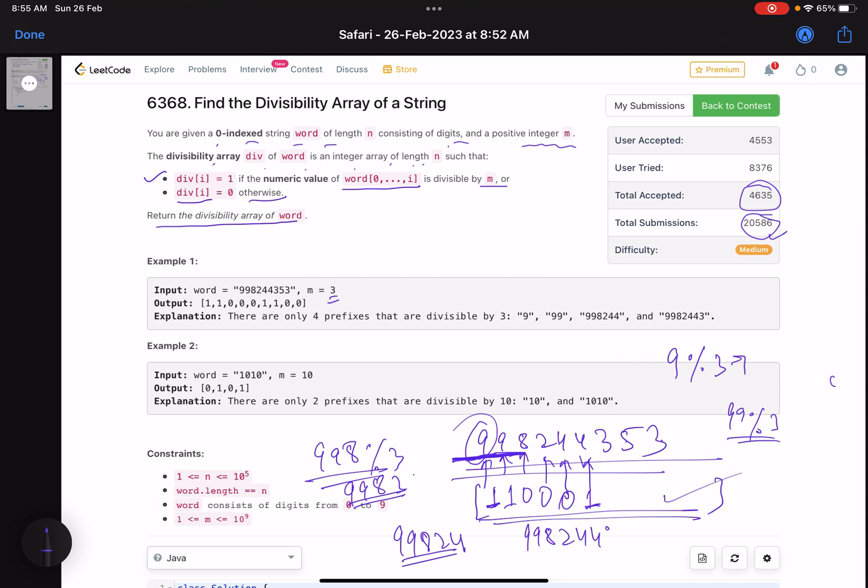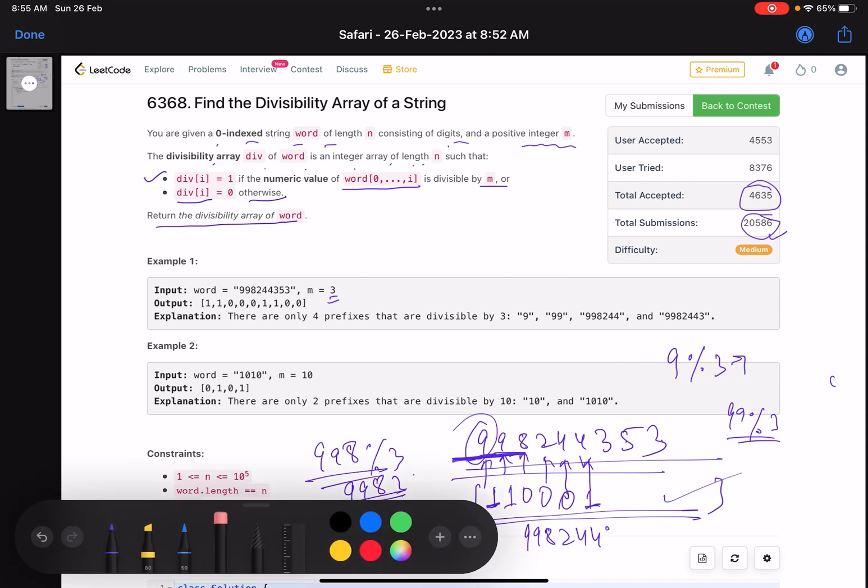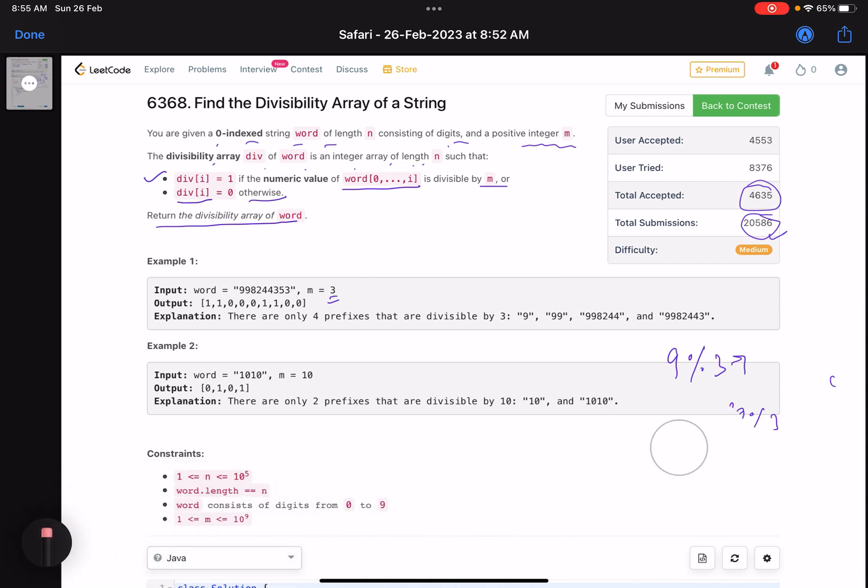You do that for all the positions and this is how you return this final array. This is what the problem is asking us to do.